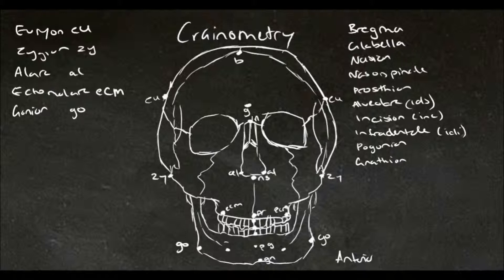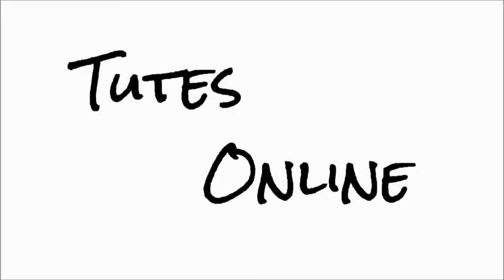And that about wraps it up for the most common paired landmarks on the anterior aspect of the skull. Thanks for watching guys, I hope you enjoyed it. If you have any questions please feel free to comment, make sure you visit our website or subscribe if you want to learn more about forensic anatomy. Thanks and I'll see you soon.